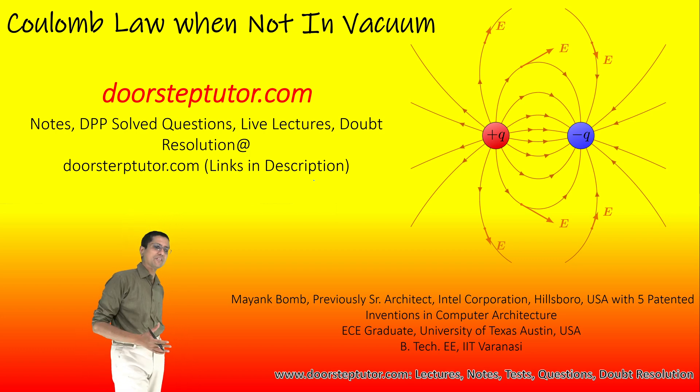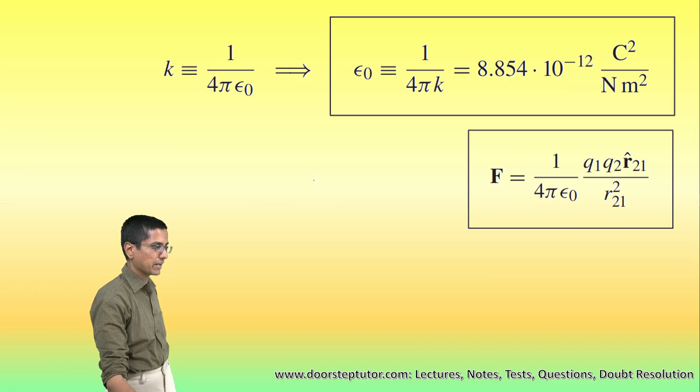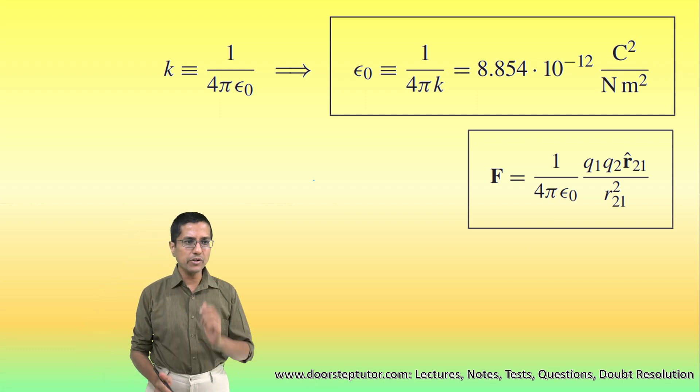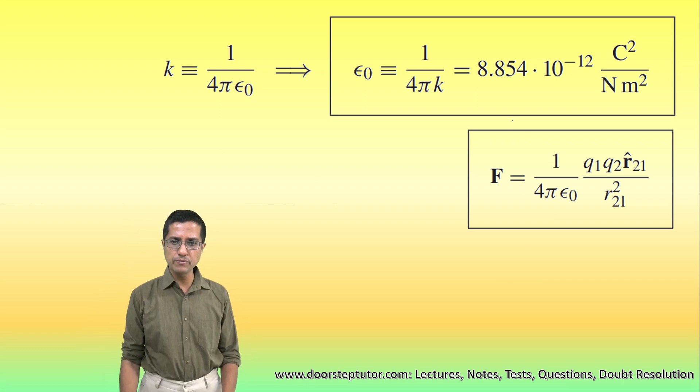Now we have talked about Coulomb's law when we have put the charges in the vacuum. So that is what we have talked about and this is the Coulomb's law for the charges which are placed in vacuum, and I say vacuum because in this formula there is a quantity epsilon naught which comes along.